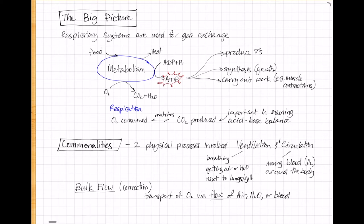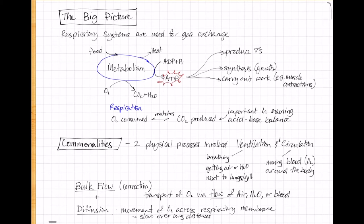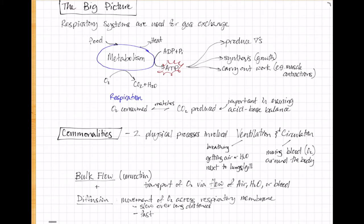In respiration, this movement is across the respiratory membrane. Remember that diffusion is slow over long distances, but it can be really fast over tiny distances, like the space between the alveoli and the capillary.